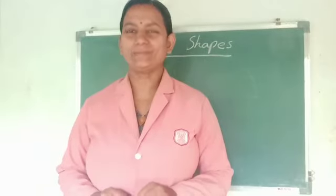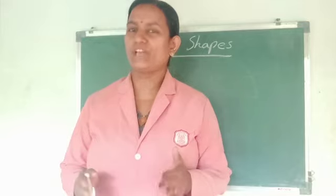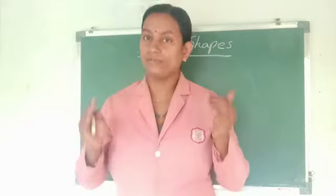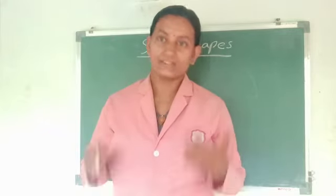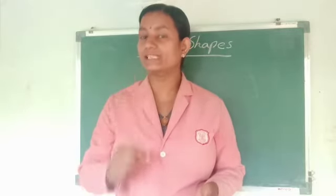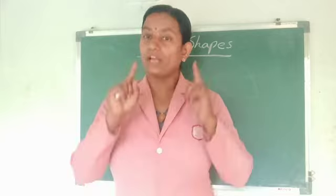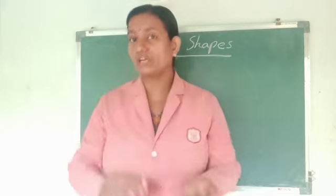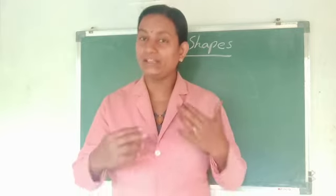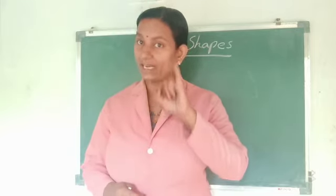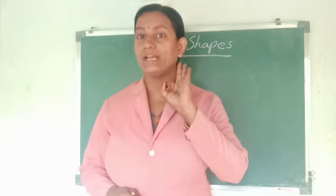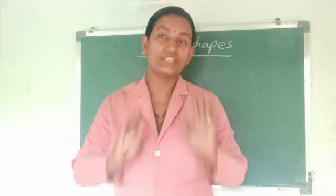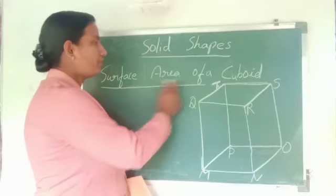Good morning students, welcome to today's session. In this session we are going to discuss solid shapes. We have learned about the area of plane figures — they have only two dimensions, that is length and breadth. Now we will study about cubes, cuboids, cylinders, etc. These objects are called solids and they have three dimensions: length, breadth, and height. These objects do not completely lie in a plane.